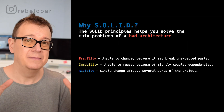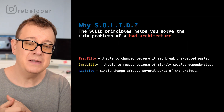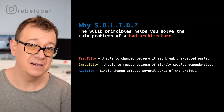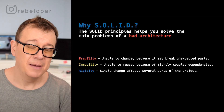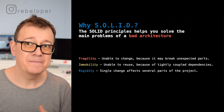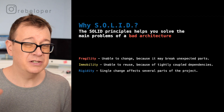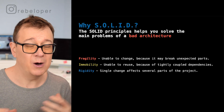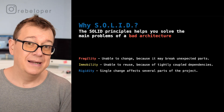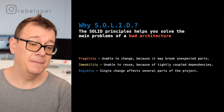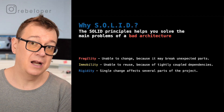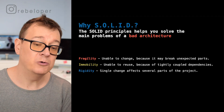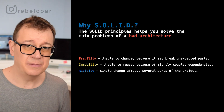Why SOLID? The SOLID principles help you solve the main problems of bad architecture — like really bad code where you open it up and say 'what's going on here?' There are three main key points around good versus bad architecture.